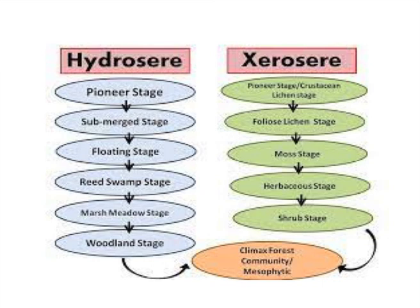In xerosere, succession starts with lichens, then bryophytes, herbaceous plants, and shrubs, ending with trees. The difference between hydrosere and xerosere: in hydrosere, the pioneer stage consists of zooplanktons and phytoplanktons, while in xerosere the pioneer stage starts with crustose lichens. Both end with woodland or tree stage as the climax. The stages of xerosere are: crustose lichens, foliose lichens, moss stage, herbaceous stage, shrub stage, and finally the tree stage.